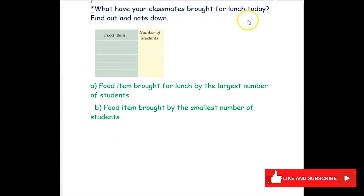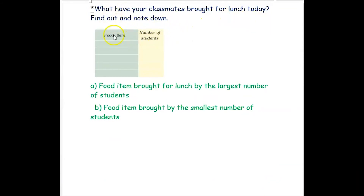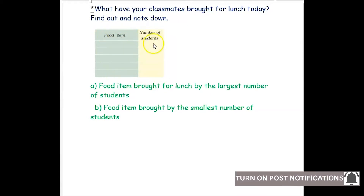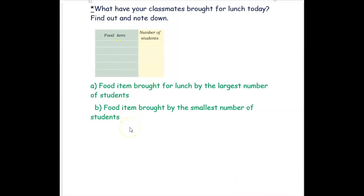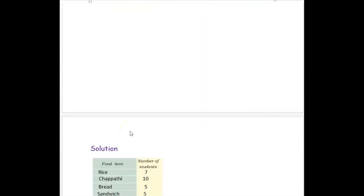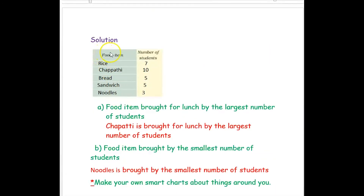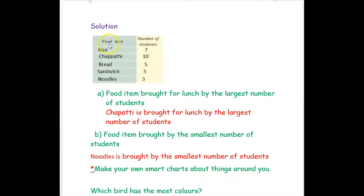Next example: what have your classmates brought for lunch today? Find out and note it down. They have given a table — food item and number of students — which we call a smart chart. I asked my friends and formed the table. Rice was brought by seven students, chapati by ten students, bread by five students, sandwich by five students, and noodles by three students.